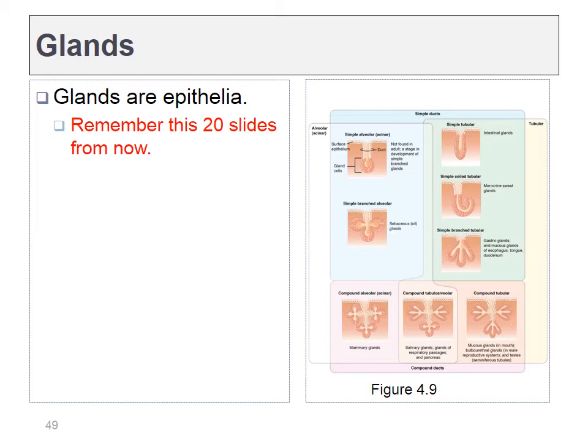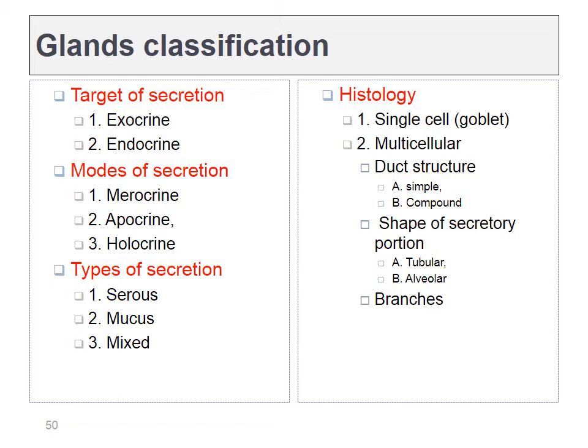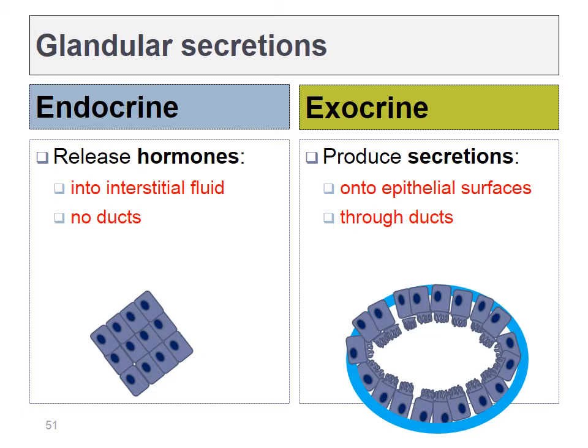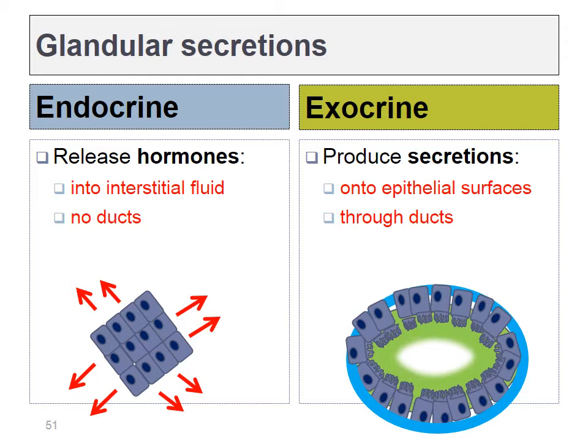Next, let's talk about glands, which are also made of epithelial cells. There are several ways to classify glands, listed here in order of importance. Most important is the secretion target: either exocrine or endocrine glands. Endocrine glands release substances into the body — either the bloodstream or interstitial fluid. Exocrine glands secrete substances to the surface of the body through a duct. Structurally, exocrine glands look different from endocrine because of the existence of this duct. The surface of the body can be the outer surface like skin, or an inner surface like the stomach secreting hydrochloric acid and digestive enzymes.